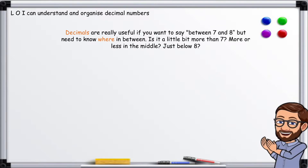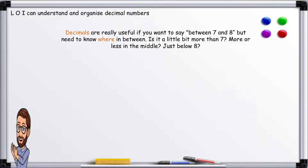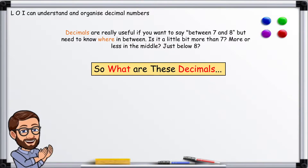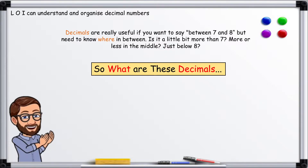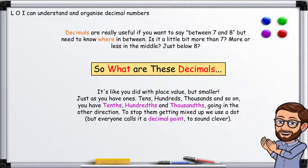Decimals are really useful if you want to say between 7 and 8, but need to know where in between. Is it a little bit more than 7? More or less in the middle? Just below 8. So what are these decimals? It's like you did with place value, but smaller.